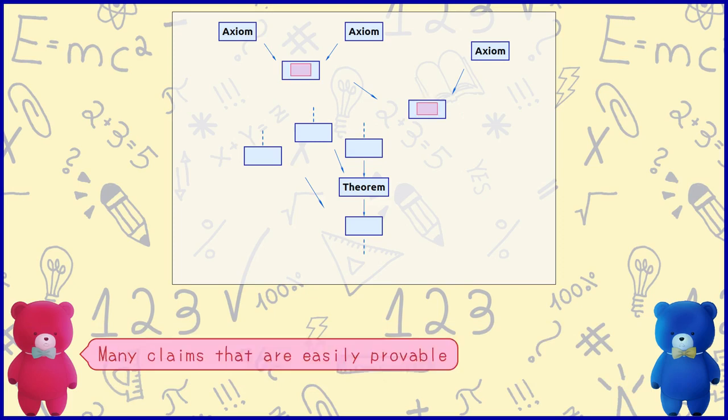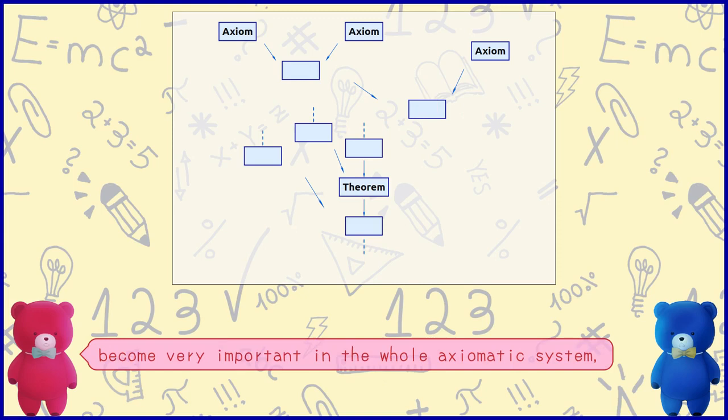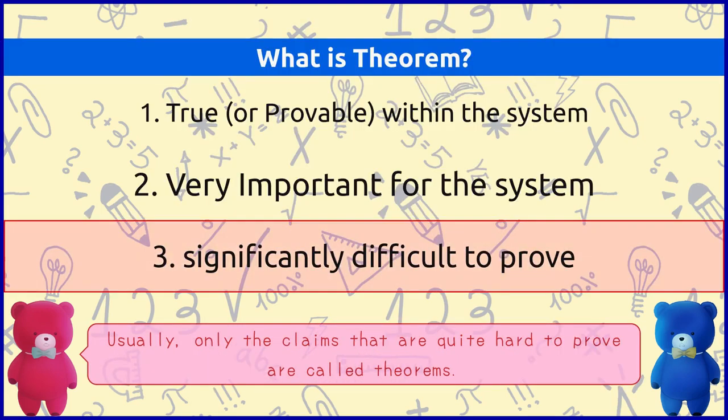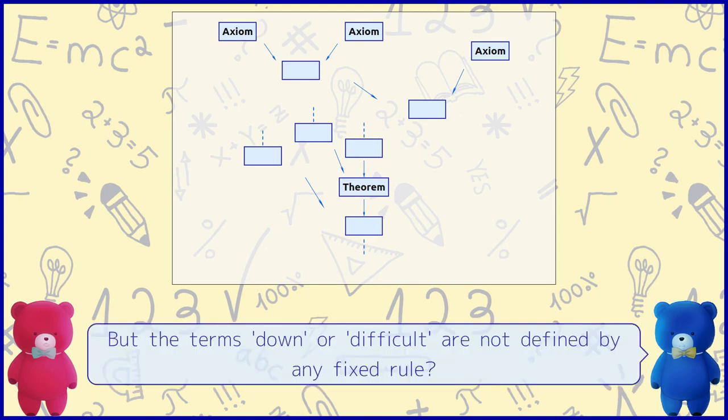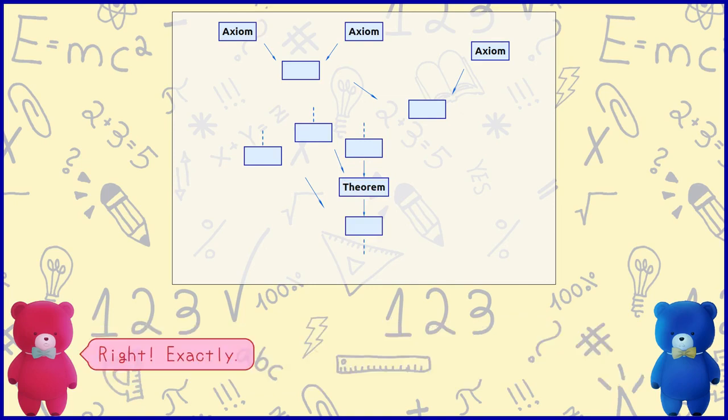Many claims that are easily provable become very important in the whole axiomatic system. But they usually aren't called theorems. Usually, only the claims that are quite hard to prove are called theorems. In this diagram, it means they have to be a certain distance down, right? Yes, yes. But the terms down or difficult are not defined by any fixed rule. Exactly.